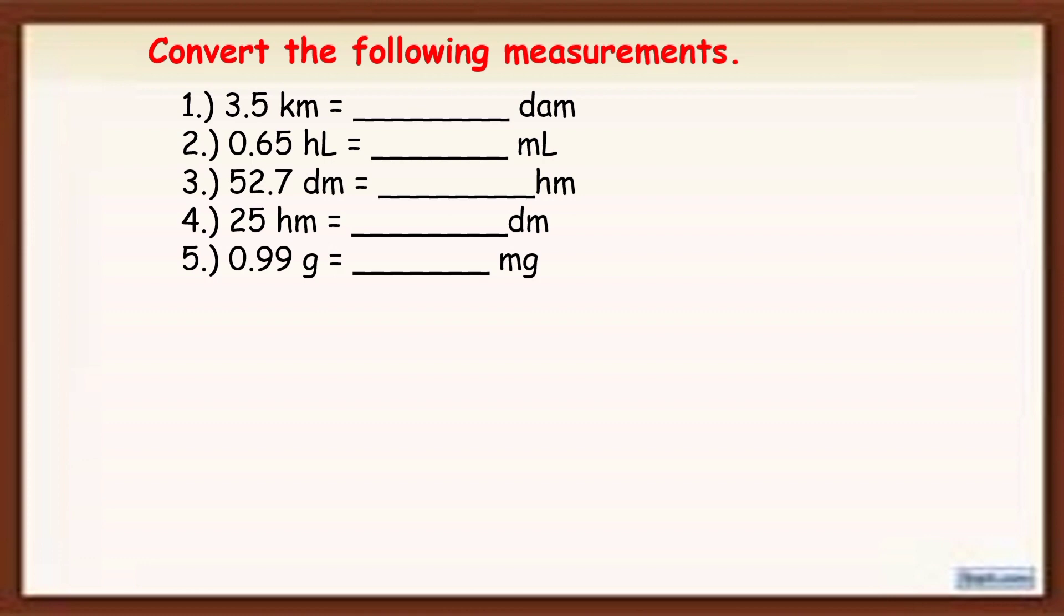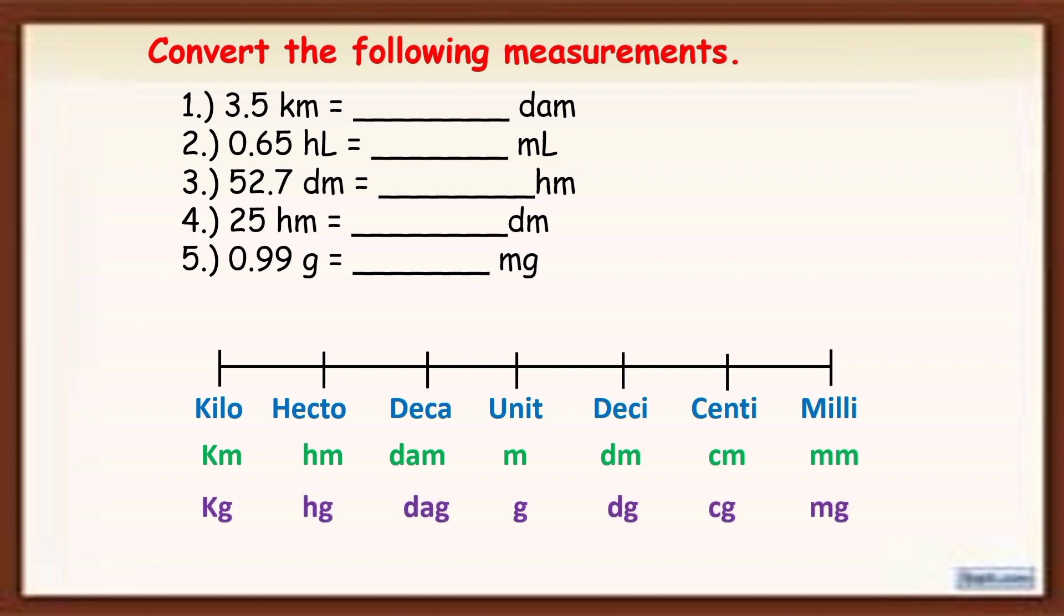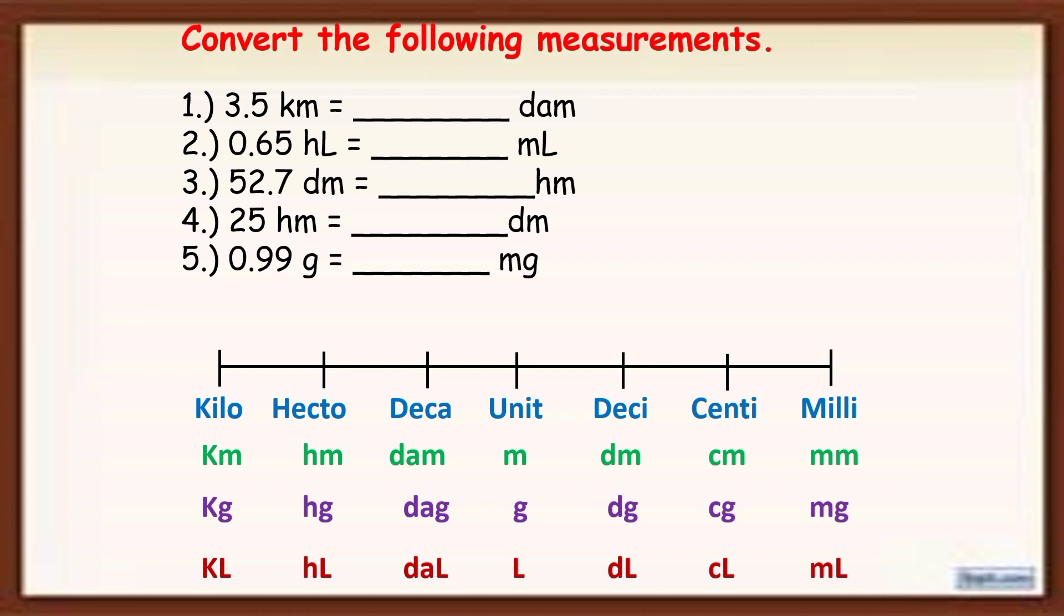So let's now answer the number 1. 3.5 km or kilometer is equal to blank dam. What is dam? Dekameter. So using the metric converter, we are going to convert kilometer to decameter. So bago yan, ilalatag ko muna yung mga metric converter. So kung meter ang kanyang unit of measurement, ito yung gagamitin natin. Ito naman kapag gram. At ito naman ang gagamitin natin kapag liter naman ang ating ikokonvert.